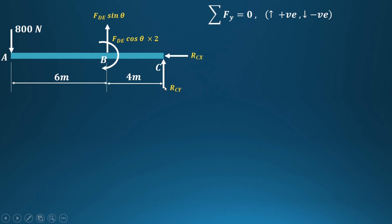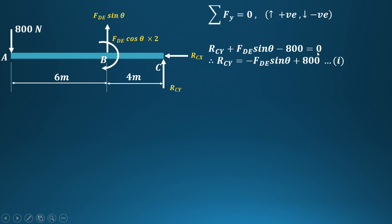To find RCy, we apply summation of forces in the y-direction equals zero. Upward forces are positive and downward forces are negative. RCy acts upward, FDE·sin θ acts upward, and 800 acts downward (negative), all summing to zero. This gives us Equation 1: RCy = 800 − FDE·sin θ.